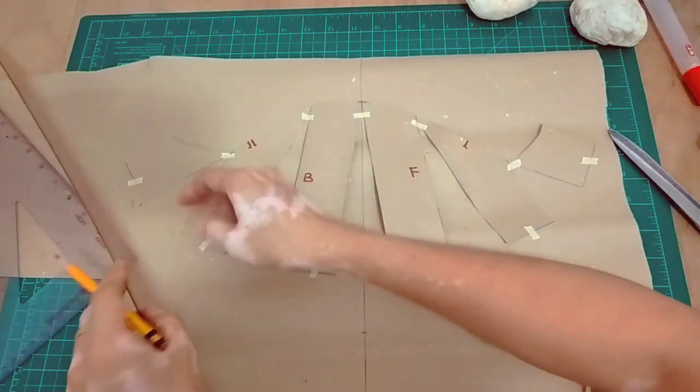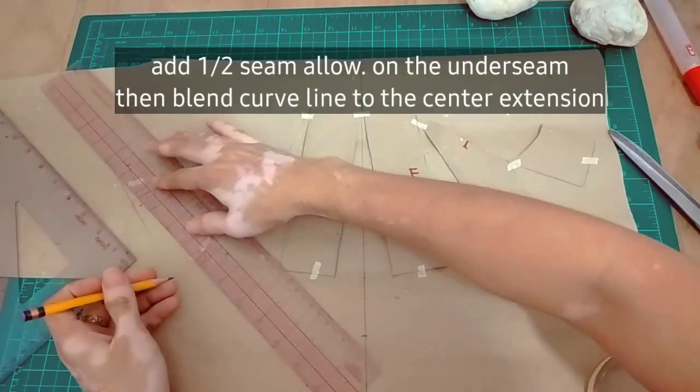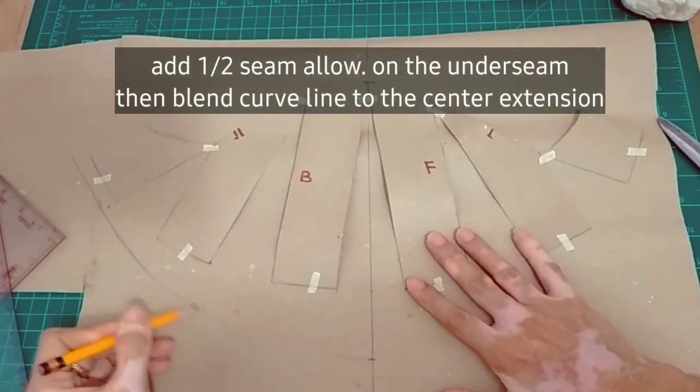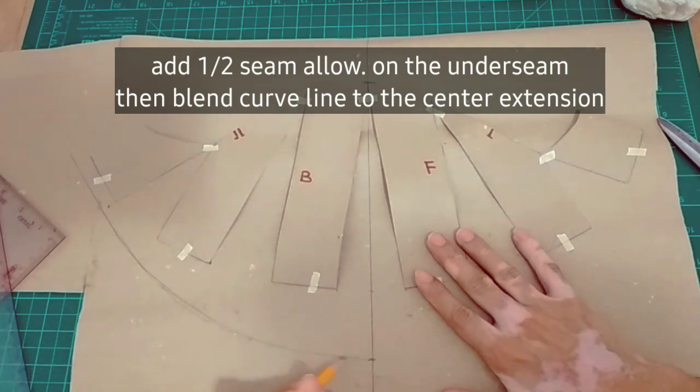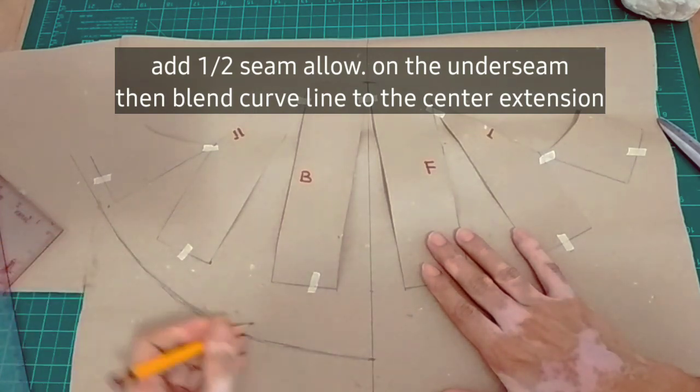First I add the 1.5 seam allowance sa under seam, and then freehand ko na syang imamatch sa may center extension natin or your 2 inch extension natin sa center.